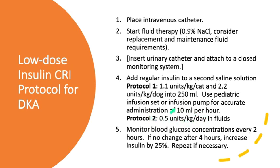Protocol two is to divide up in your fluids 0.5 units per kilogram per day. This gives you less control and you have to adjust upwards or downwards, but if you don't have an infusion pump, this is also a way to do it. Once you start the CRI, monitor glucose every one to two hours. If you don't see any change after four hours, increase the insulin by about 25%. Keep checking the glucose — if going in the right direction, stay your course; if staying the same or going up, increase the dose.